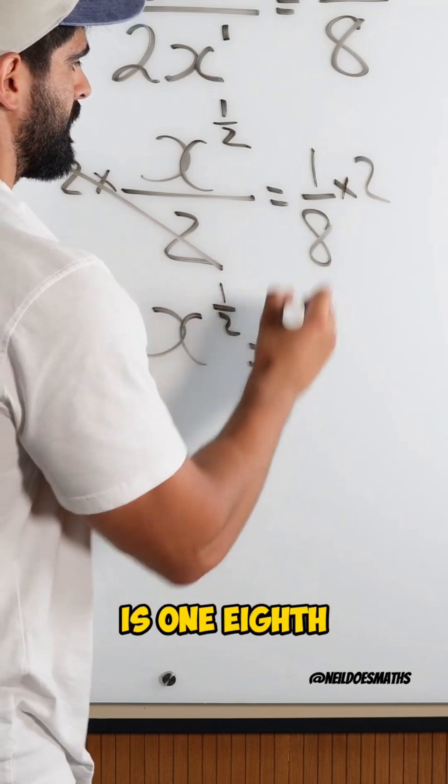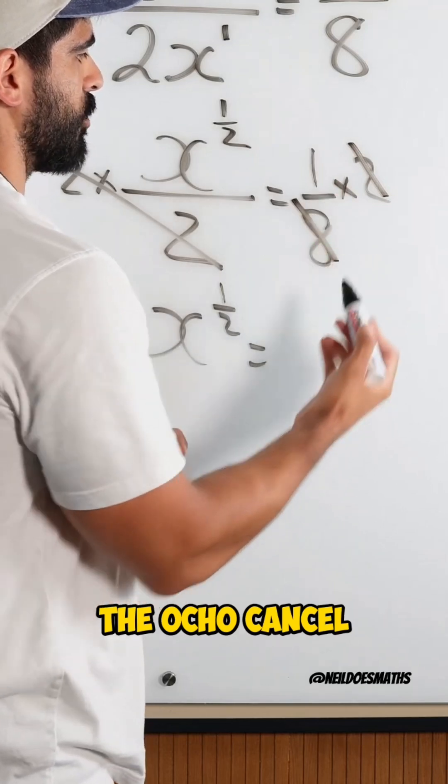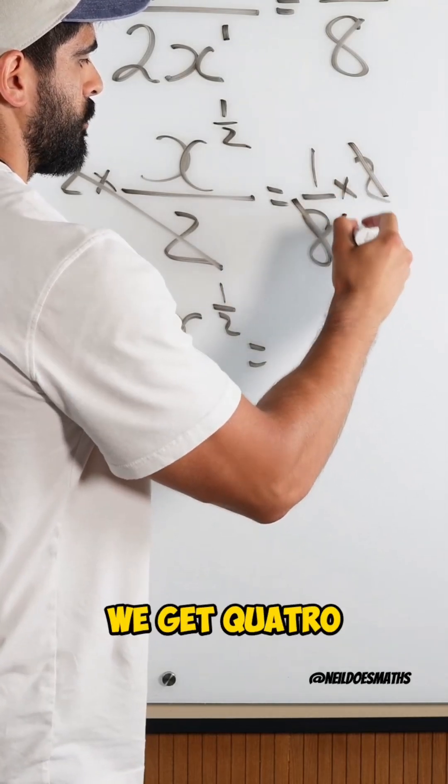x to the power of a half is 1 eighth times 2. The 2 and the 8 cancel. We can divide both numbers by 2. We get 4.